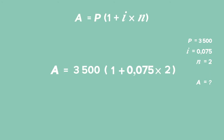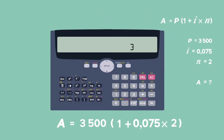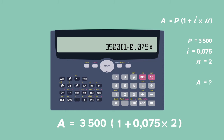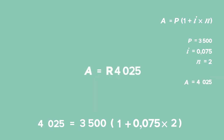We have most of the values we need, except for A which is what we need to calculate. You will enter R3,500 in brackets, 1 plus 0.075 multiplied by 2, close brackets, into your calculator and only round off at the very end. The final answer is R4,025.